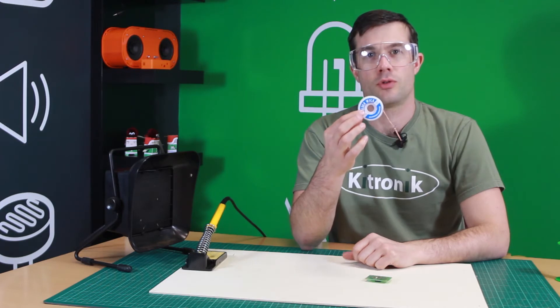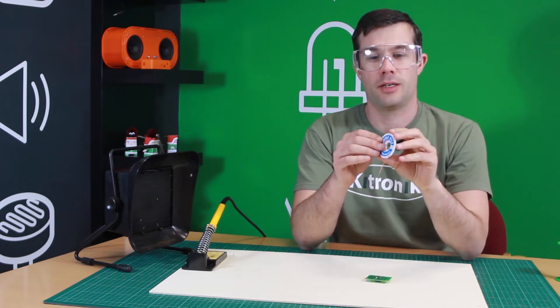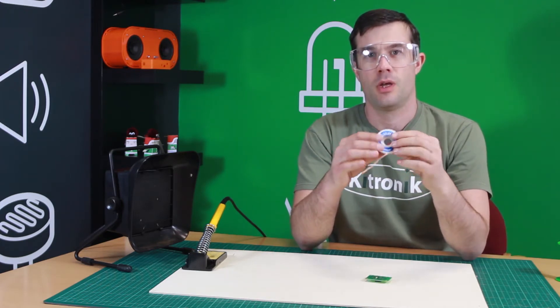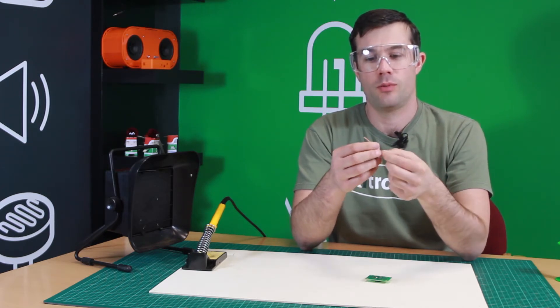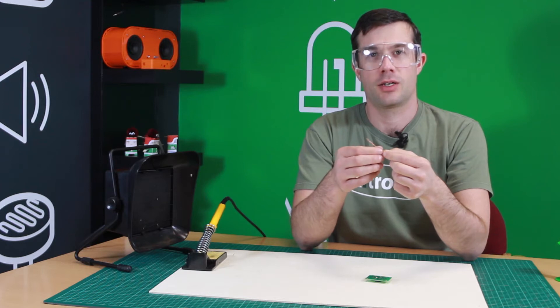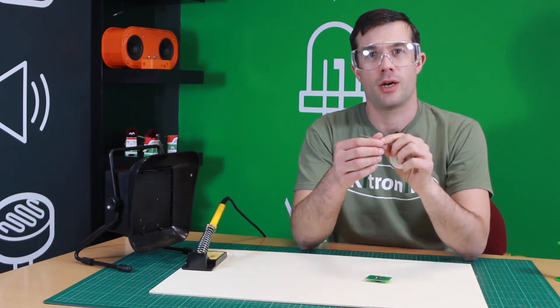So here we have some solder wick. It's normally supplied in these handy little dispensers, and it's a woven copper braid. Now what that woven copper can do is it can mop up molten solder. So let me show you how we use this.